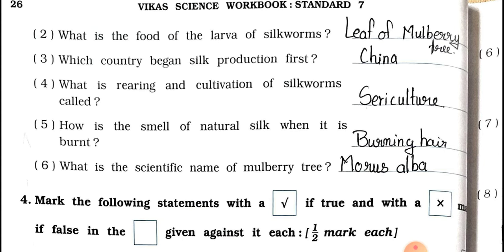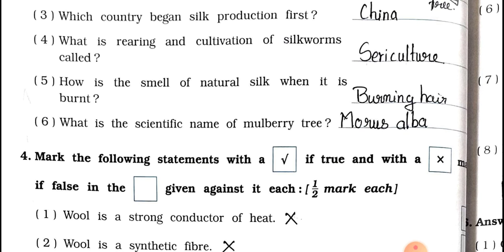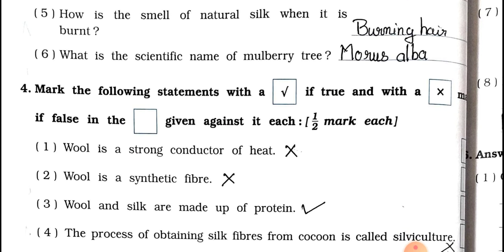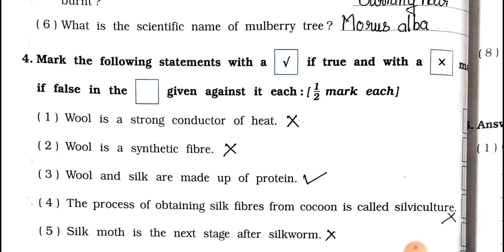Question 4: What is the rearing and cultivation of silkworms called? Answer: Sericulture. Question 5: How does natural silk smell when it is burnt? Answer: Like burning hair. Question 6: What is the scientific name of the mulberry tree? Answer: Morus alba.